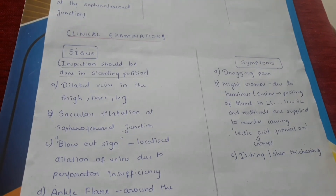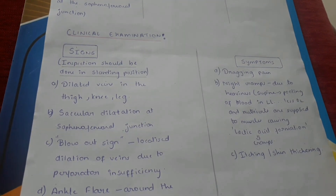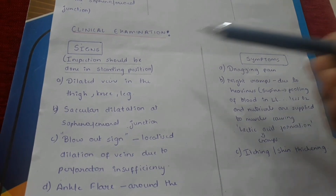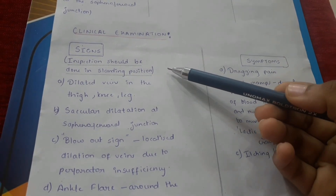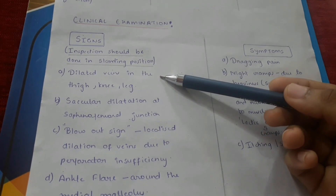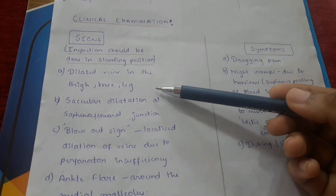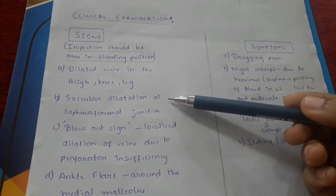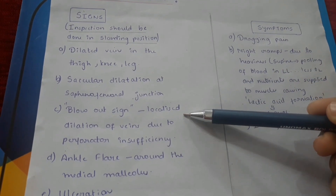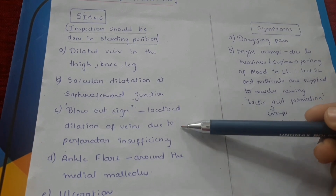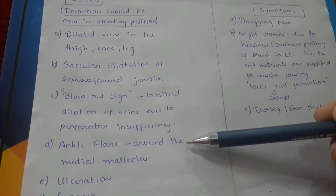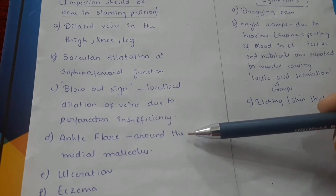Clinical examination — signs and symptoms. Inspection of signs should be done in a standing position. Signs include dilated veins in the thigh, knee, or leg; saccular dilatation at the saphenofemoral junction; a blowout sign — that is, localised dilation of veins due to perforator insufficiency; and ankle flare, which is seen around the medial malleolus.